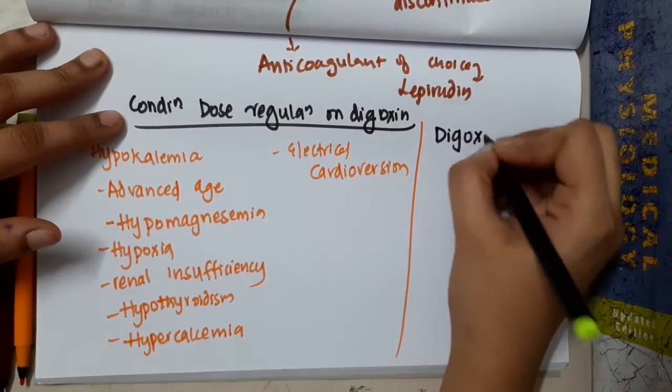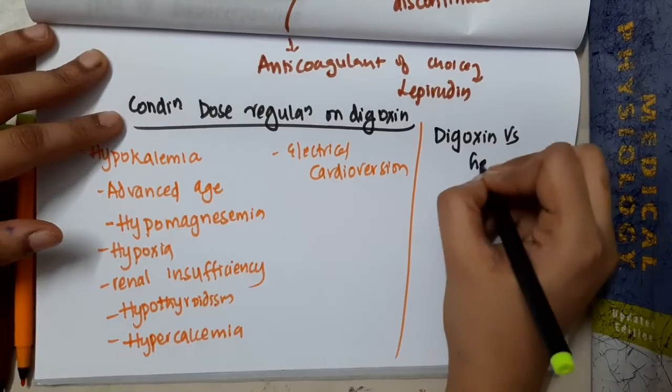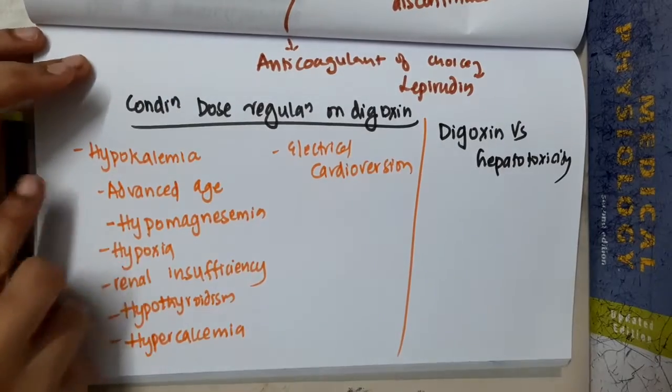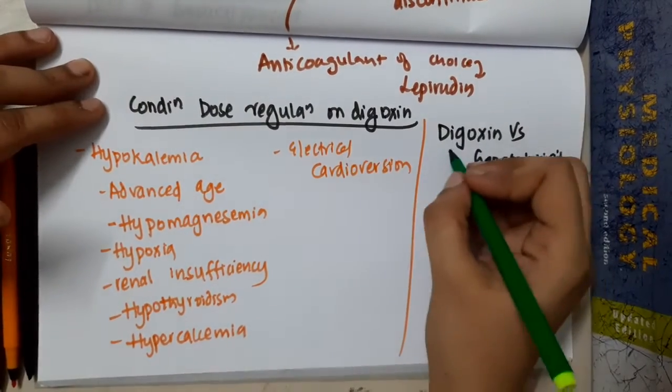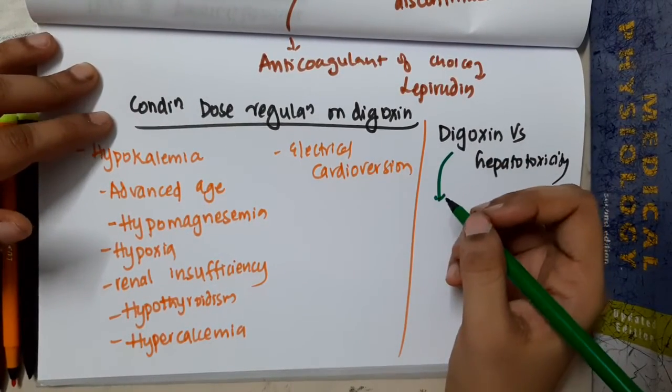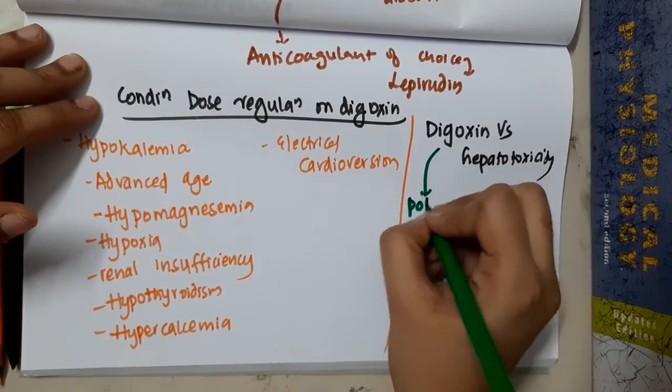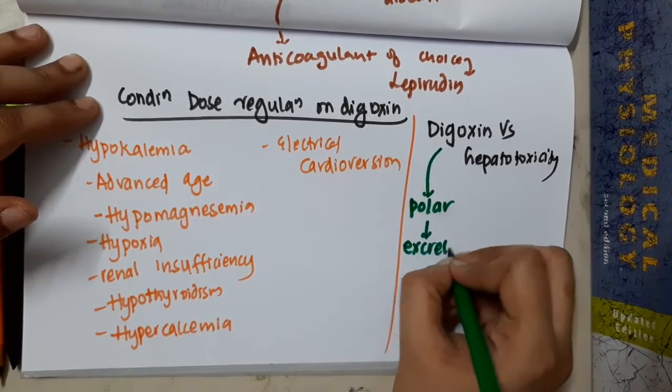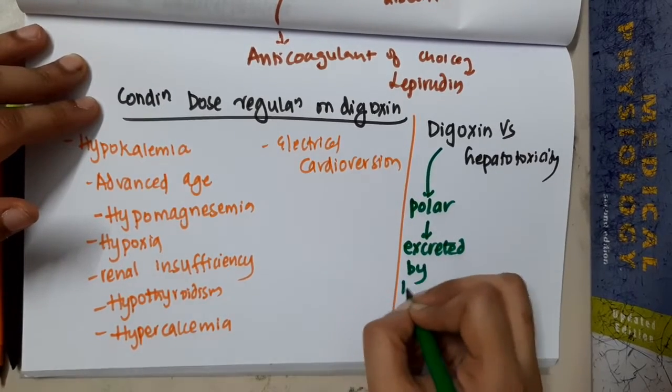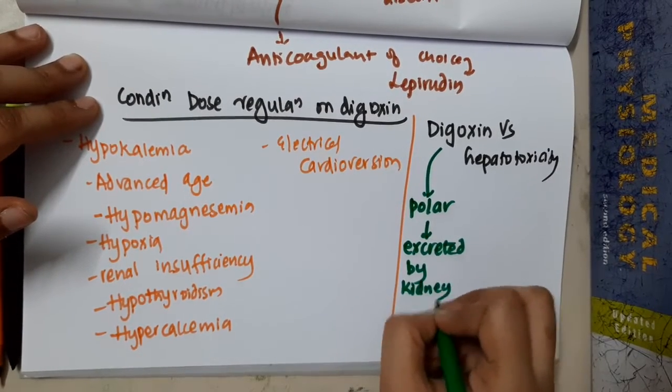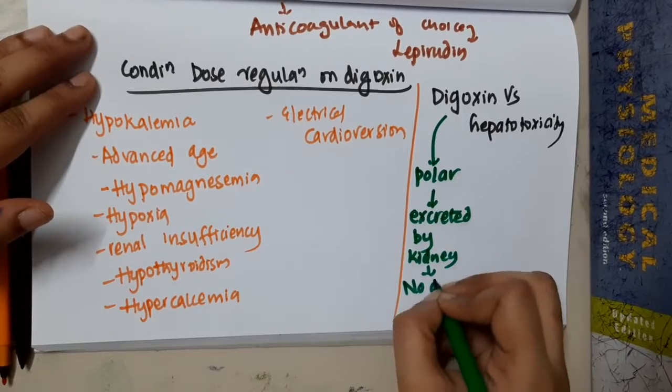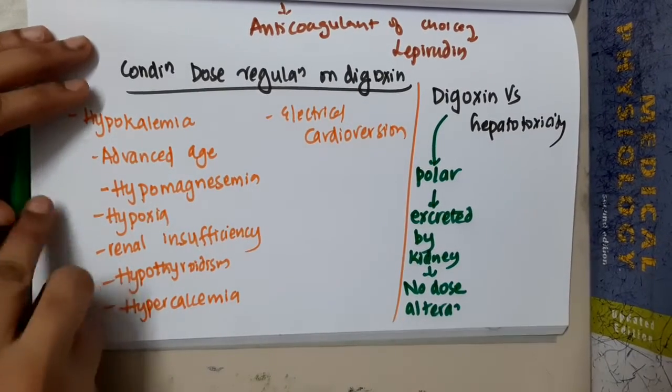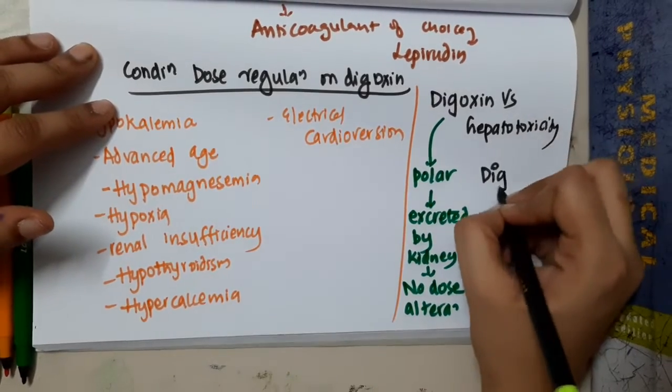Digoxin versus hepatotoxicity. If you see, digoxin is polar and it is excreted by kidney, so no dose alteration. But there is one more drug which is similar to digoxin, which is digitoxin.